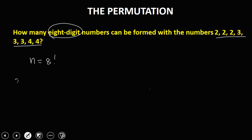For number 2, since we have 3 number 2s, this is equal to 3 factorial. And for number 3, since we also have 3 number 3s, that's 3 factorial. Then for number 4, since we have 2 of number 4, that's 2 factorial.